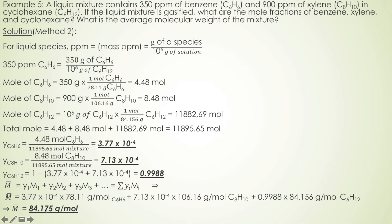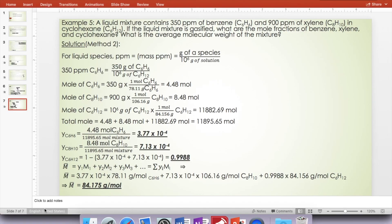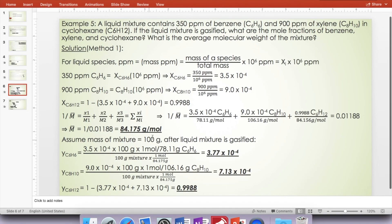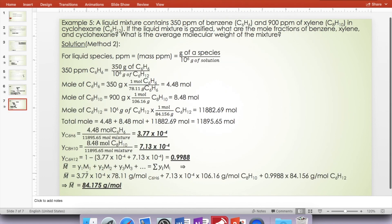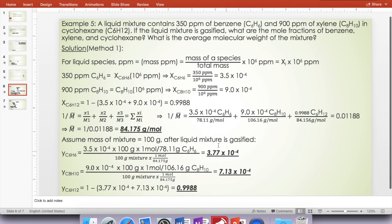Now let's go back and look at the answer from the first method. We get exactly the same answer: 84.175 g/mol for average molecular weight, and a mole fraction for benzene of 3.77 × 10⁻⁴. Both methods give exactly the same result.